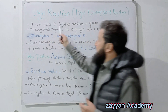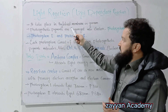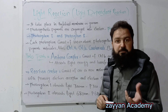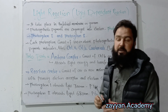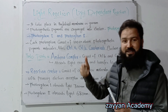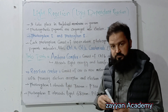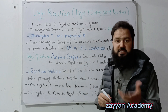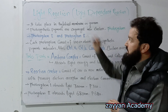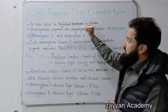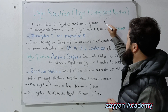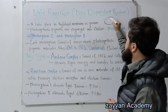It takes place in the Thylakoid Membrane or Granum — the Thylakoid Membrane or Granum of Chloroplasts. The chloroplasts are used in the granum of chloroplasts.